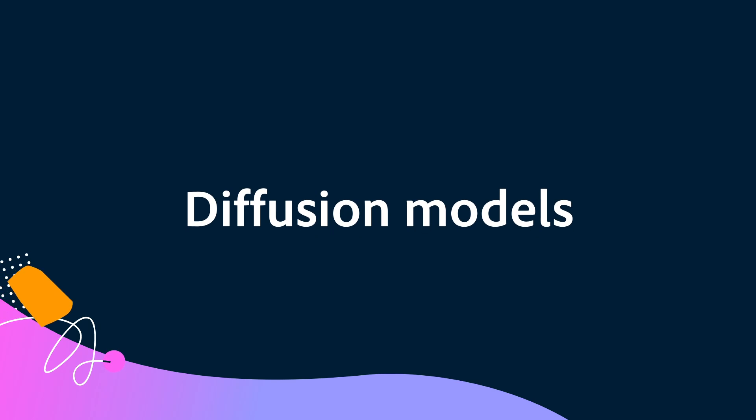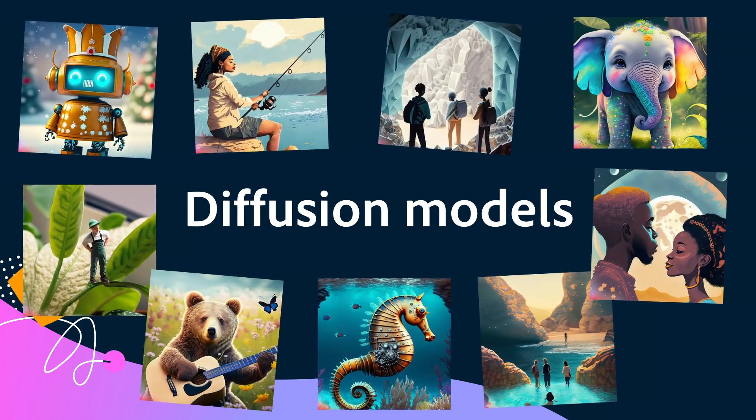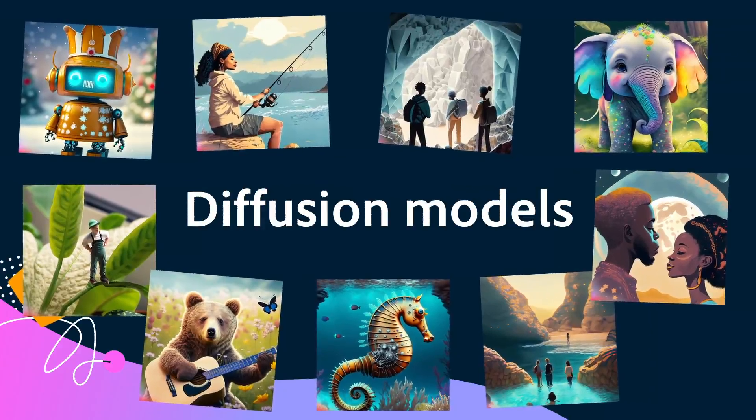Gen AI also relies on a breakthrough technology called diffusion models, which use datasets that include millions of labeled images. The images are then diffused — or turned into a kind of super pixelated noise. The model then learns to turn that noise back into higher fidelity images that match the text prompt.